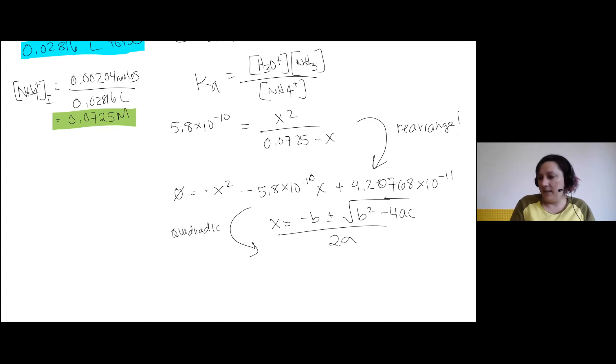And I'm going to get a value that's reasonable. I get a negative value for X and a positive value for X. The positive value is the only one that makes sense, of 6.48637 times 10 to the negative 6. Whew. Okay.